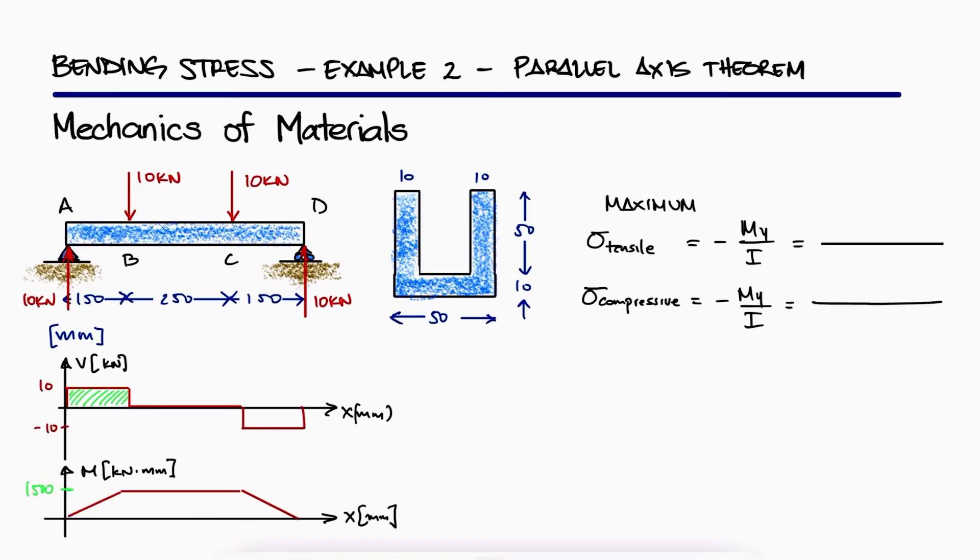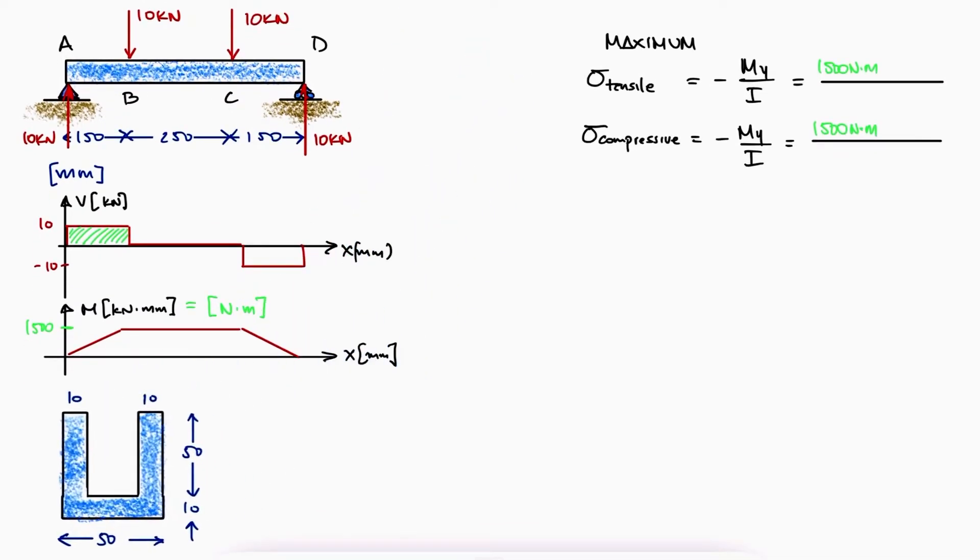With these, we see that the bending moment is equal to positive 15 Nm. To find the distance Y and the second moment of area I, we'll need the location of the neutral axis. Finding the location of that neutral axis is just finding the centroid's location of the entire cross section.